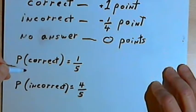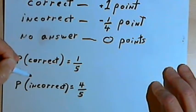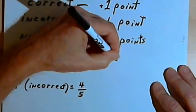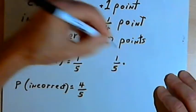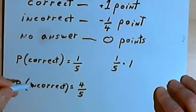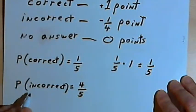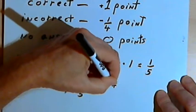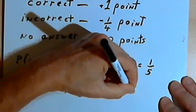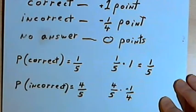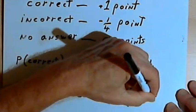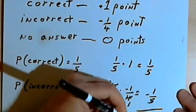Now we can figure out the expected value — what you should expect to either gain or lose on average if you guess a lot of times. We take the probability of getting a correct answer, one-fifth, and multiply it by what happens if you're correct, which is gaining one point: one-fifth times one equals one-fifth. Then for incorrect answers, we multiply four-fifths by negative one-quarter, because you lose a quarter of a point when incorrect. That works out to negative one-fifth.